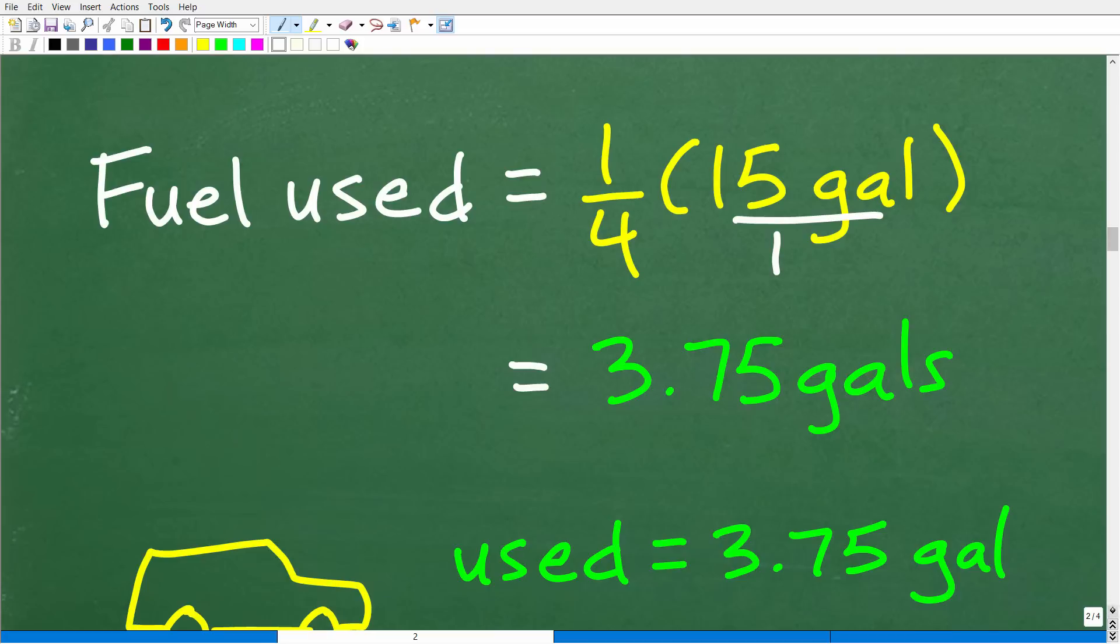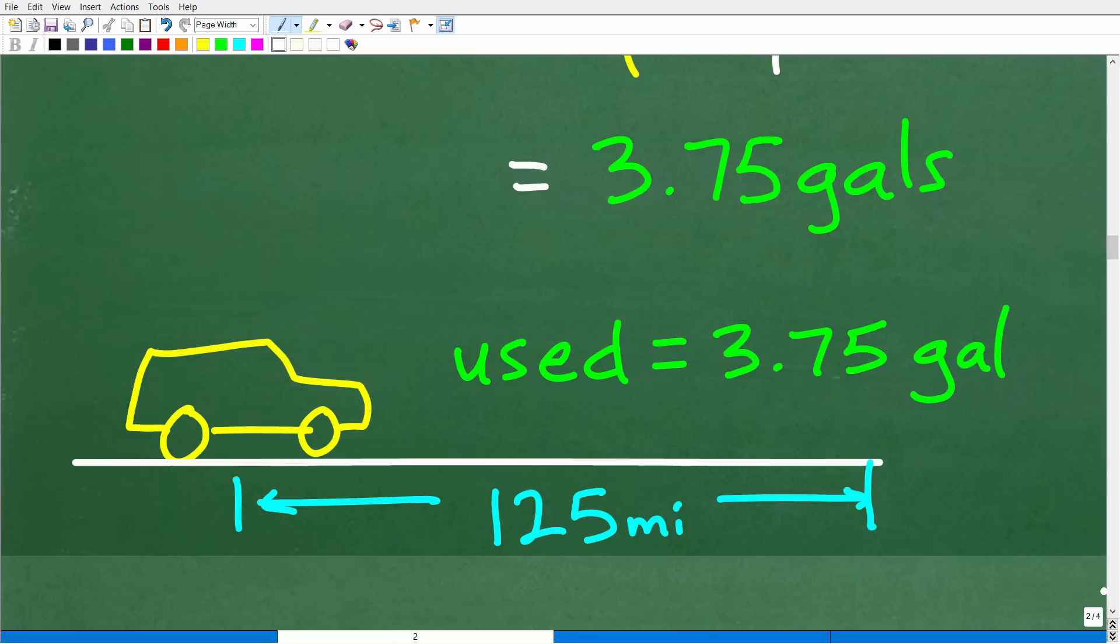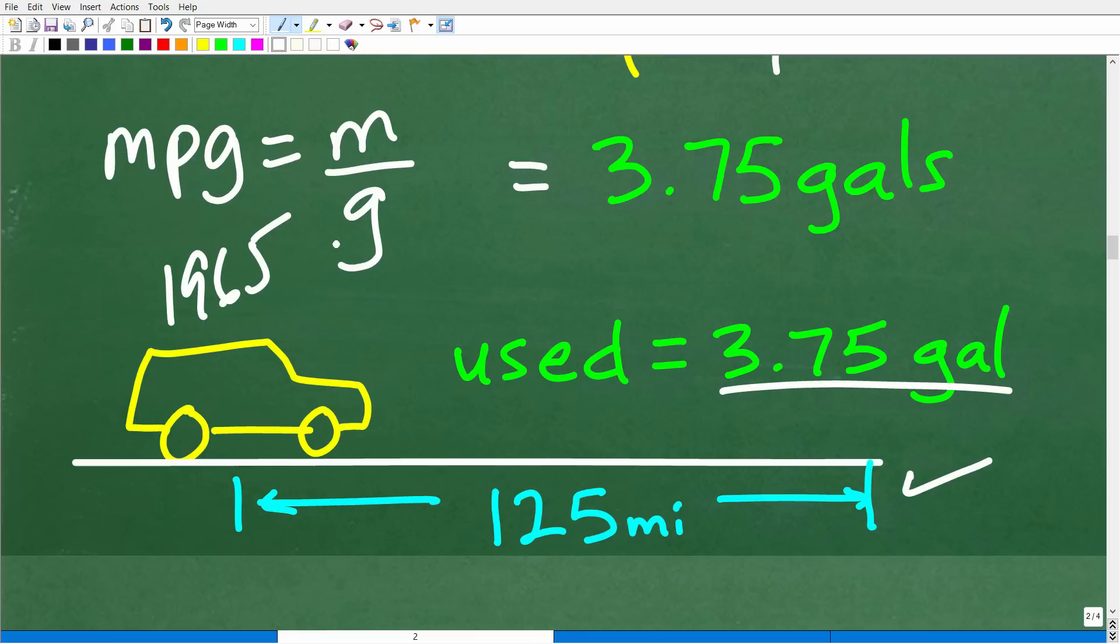All right. So now our problem really is to steal down as the following. So here is our 1965 whatever it is. Striving down the road, it used 3.75 gallons to go 125 miles. All right. So now we're ready to kind of calculate miles per gallon. Again, it's going to be a fraction of miles in gallons. But there's a little bit more of a twist here. But this is not going to be that difficult. So we're going to take the next step.